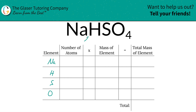Next is to identify the number of atoms, and that's where the subscripts come into play. Now, if you don't see a subscript at the bottom of that particular element, simply just plug in a 1 because that's what it is assumed to be. So sodium has one atom, hydrogen is 1, sulfur is 1, and oxygen is 4.